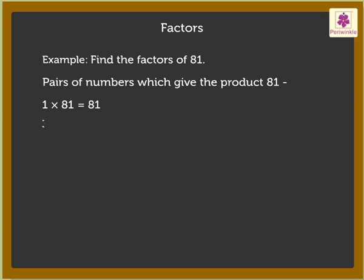3 times 27 equals 81, 9 times 9 equals 81. Thus the factors of 81 are 1, 3, 9, 27, and 81.